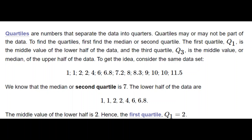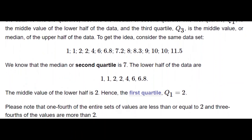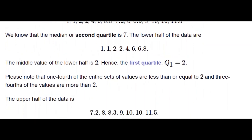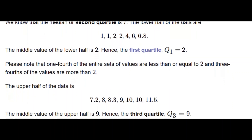In the same way, the third quartile Q3 is found among the numbers greater than the median, starting from 7.2 and ending at 11.5. There are again seven values, so the middle — the 4th value starting from 7.2 — is the median of that half, which is 9. So Q3 equals 9.